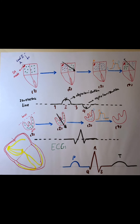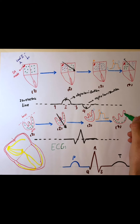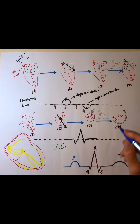Unlike the atria, where all cells had the same action potential duration, here in the ventricles it is the opposite. The first cell which depolarizes is the last cell to be repolarized. So in the last stage, the last cell which was depolarized is the first cell to be repolarized. Our base and the base of our left ventricle are the first ones to be repolarized, and the other parts are still depolarized.